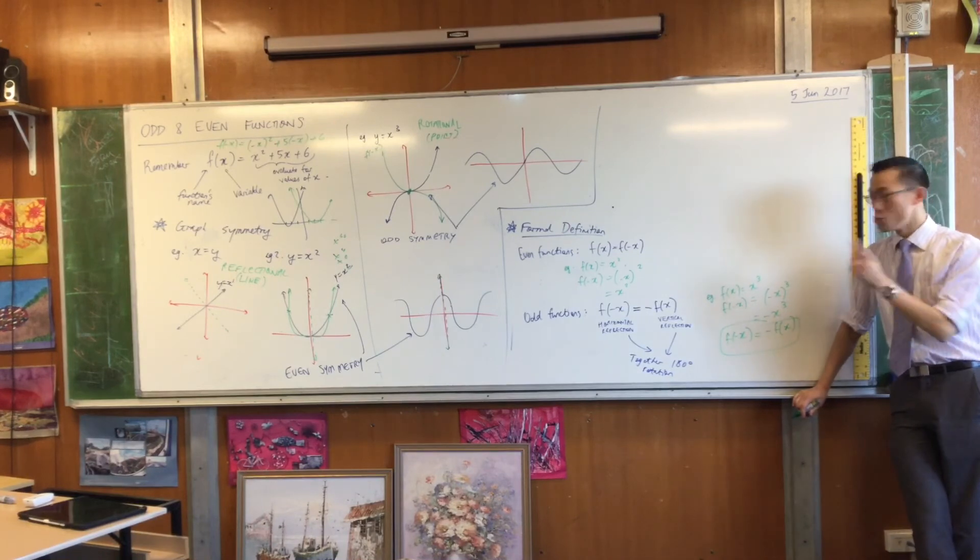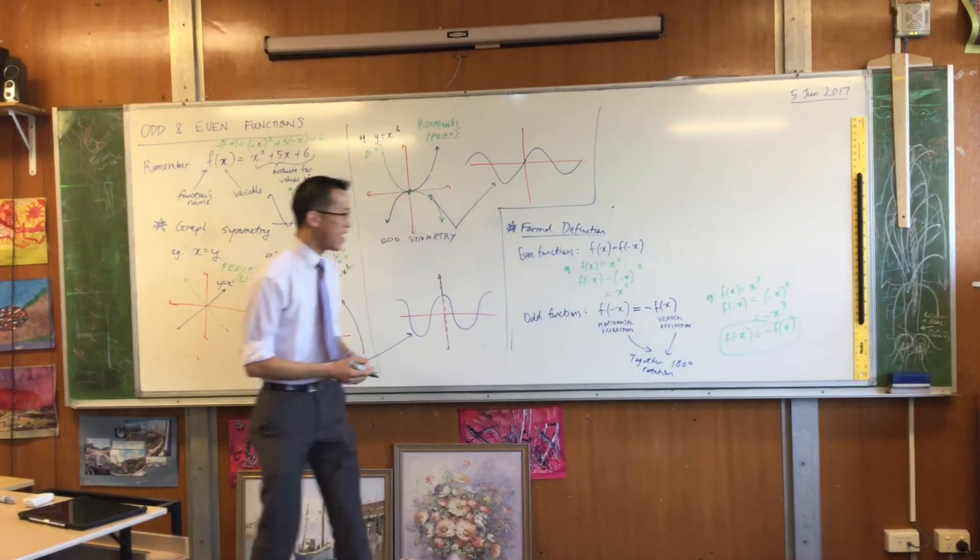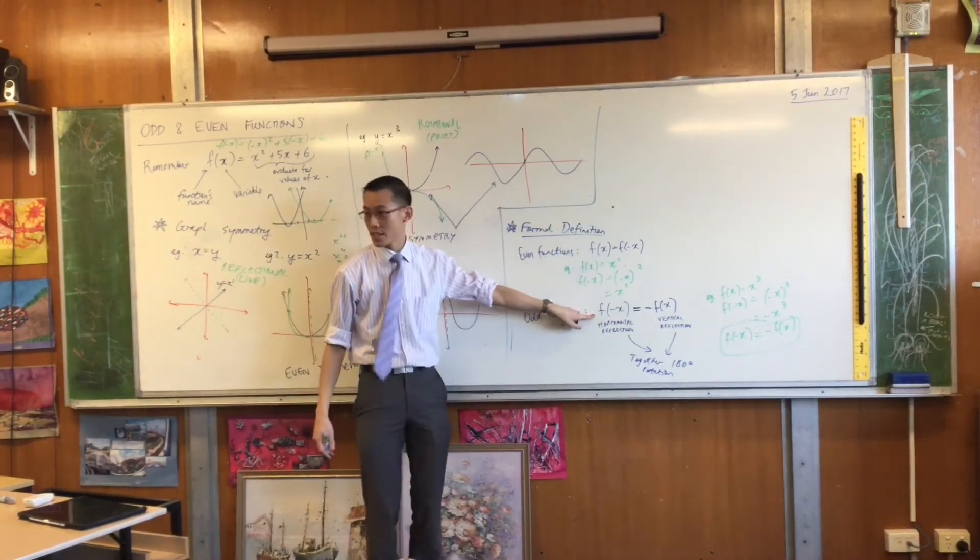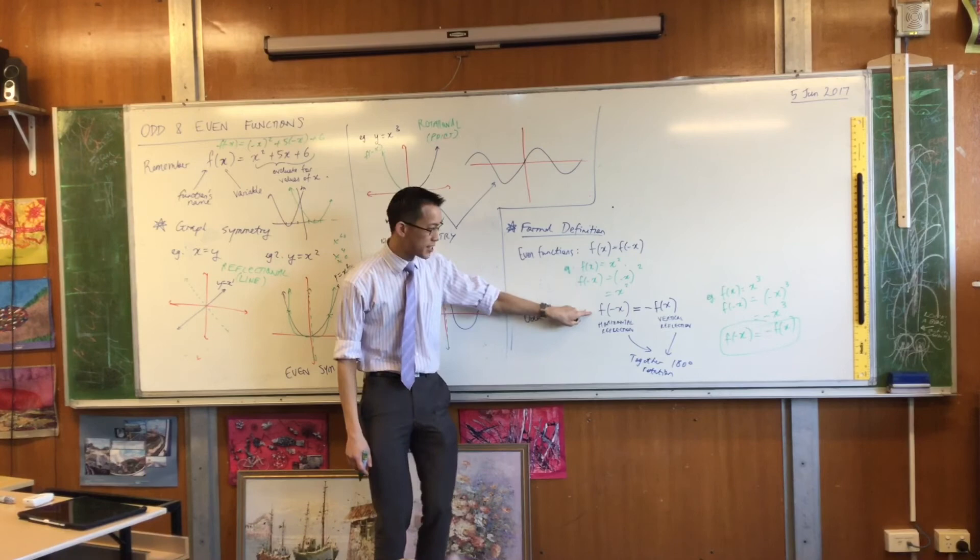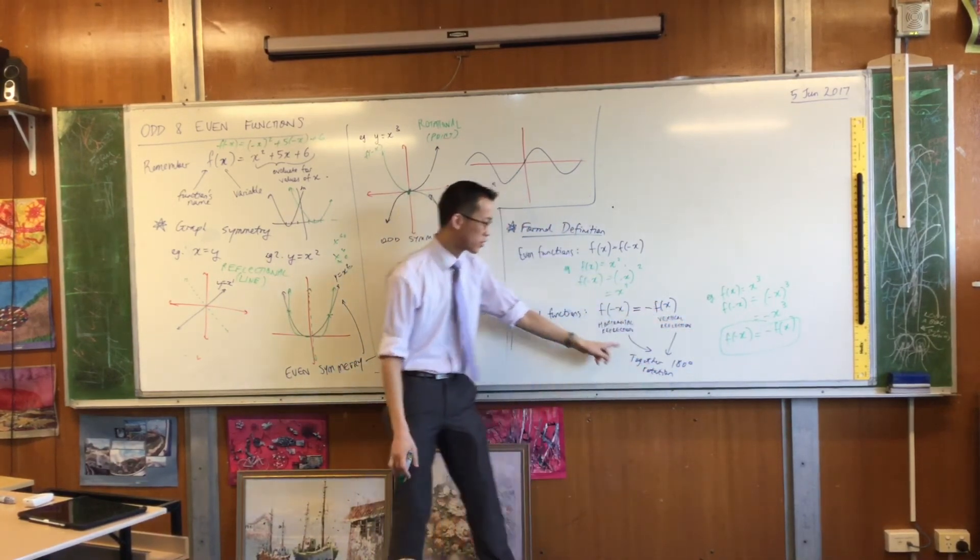You will notice an important thing that you will hopefully remember back from trig identities. If I want to prove that this is the case, I don't write this as my first line. I write this as my last line. Does that make sense? So just watch out for that. Don't begin here, this is where you should end.